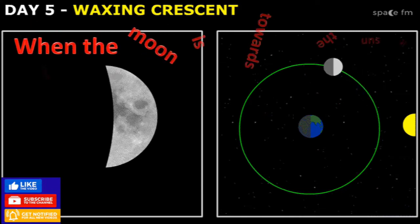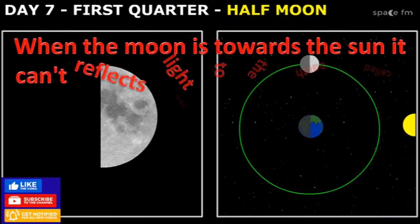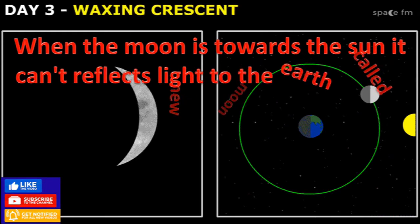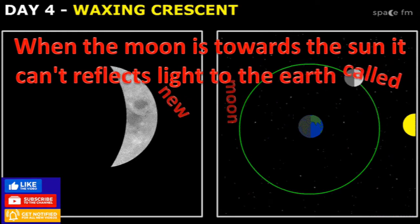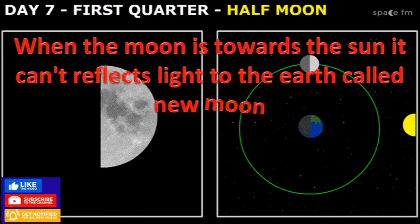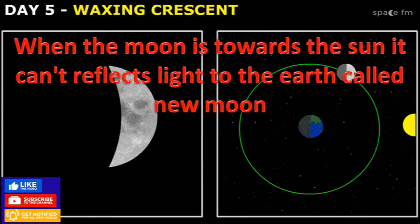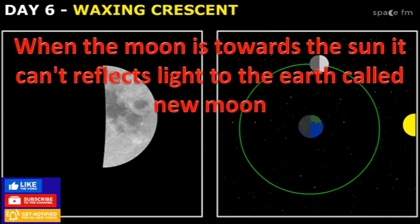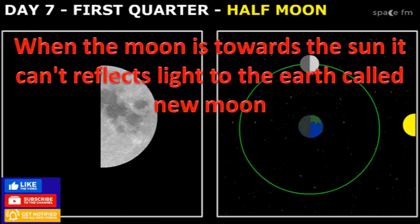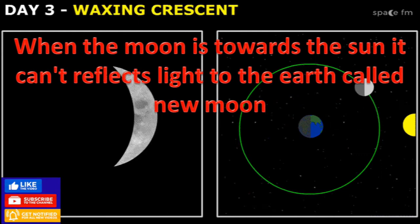When the moon is towards the sun, it cannot reflect light to the earth, and this is called new moon. When it moves away from the sun around the earth, then gradually the bright part of the moon increases.